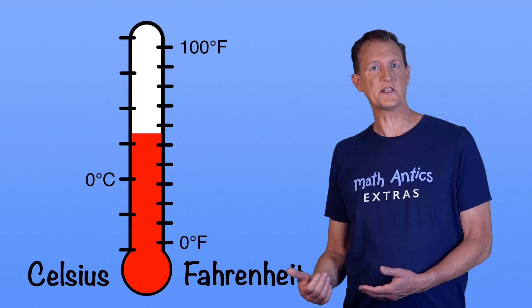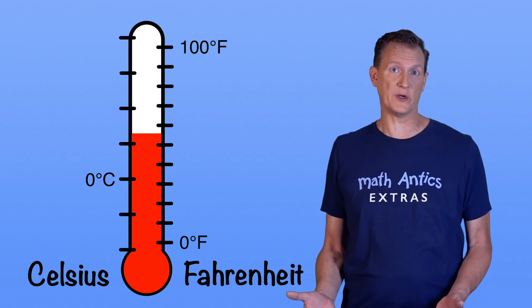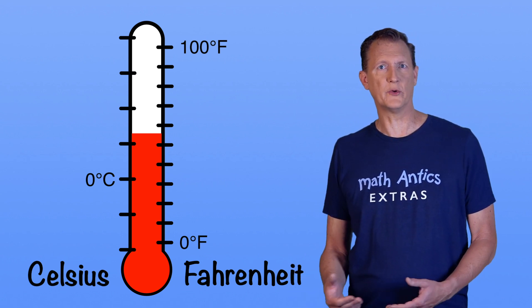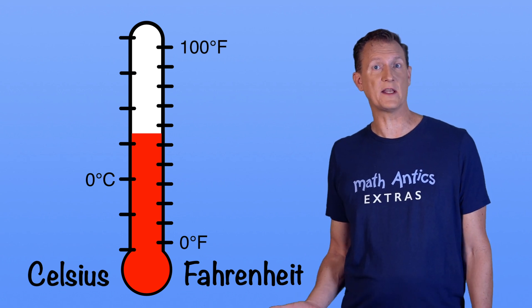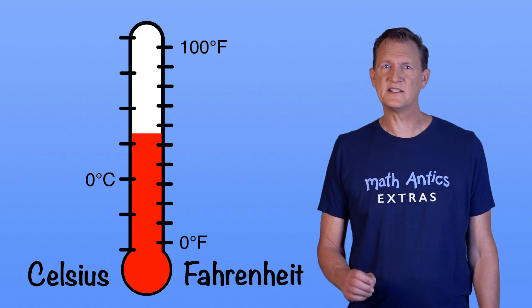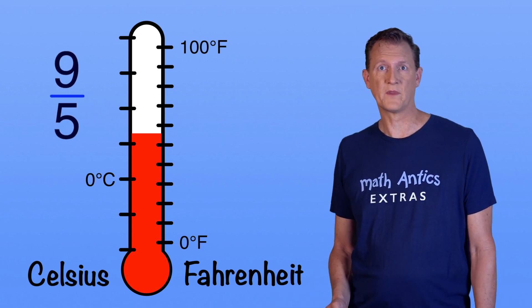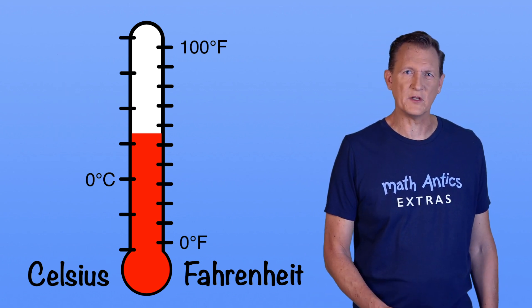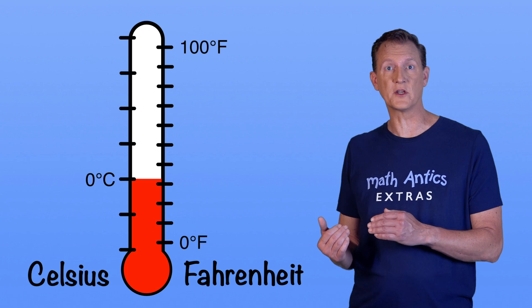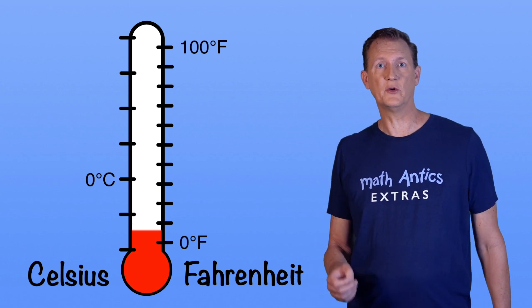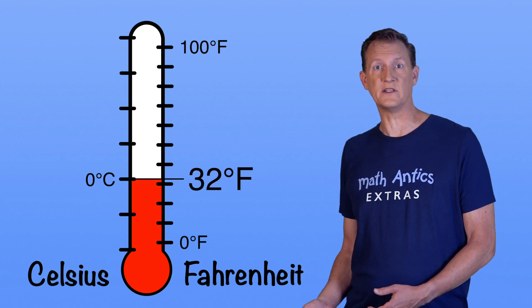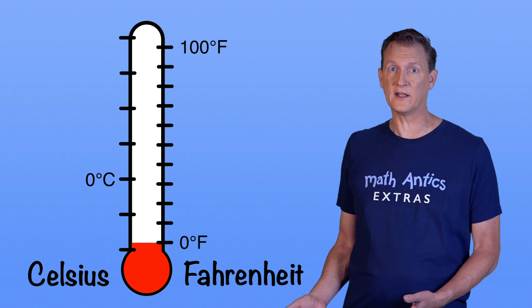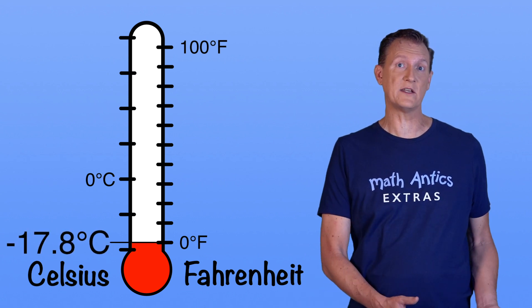That's because a degree on the Celsius scale is a different size than a degree on the Fahrenheit scale. A degree in Celsius is about twice as big as a degree in Fahrenheit. To be exact, it's 9 fifths as big. And because it's bigger, fewer of them fit on the thermometer. And to make things really confusing, the zero points of their scales are at different temperatures. 0 degrees Celsius is 32 degrees Fahrenheit, and 0 degrees Fahrenheit is about negative 17.8 degrees Celsius.